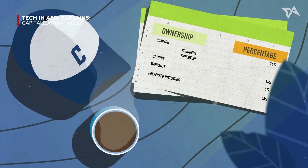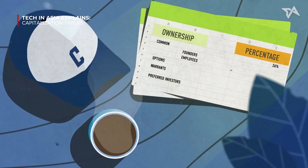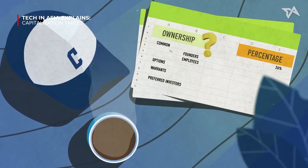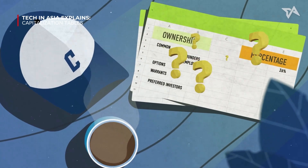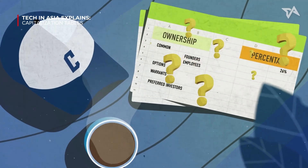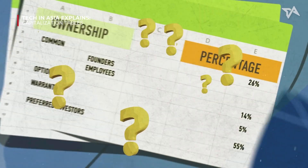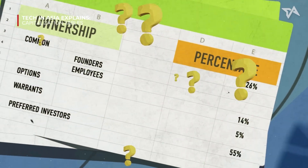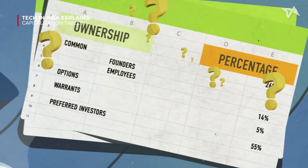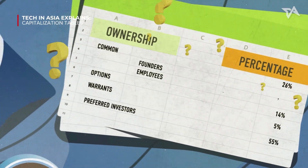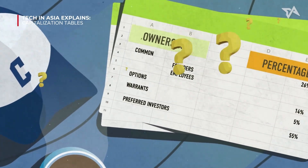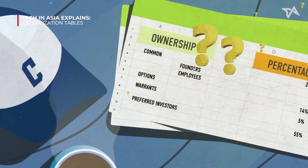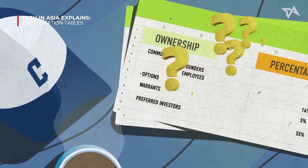Capitalization tables, or cap tables, keep track of a company's equity, basically serving as a breakdown of a company's ownership. It might sound like a boring topic to get into, but a messy cap table could sink a potential investor's interest in a startup.